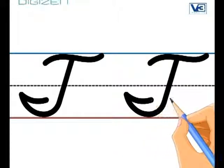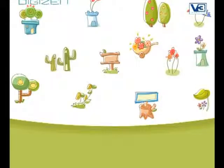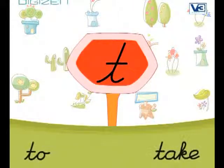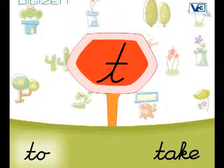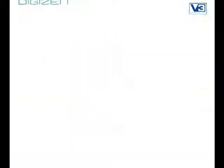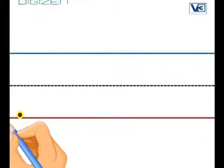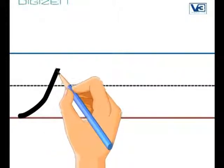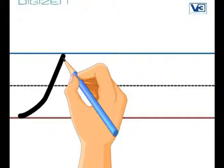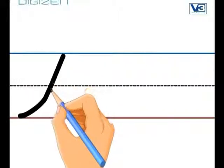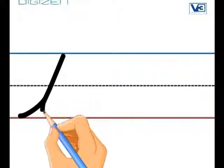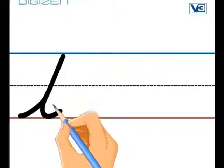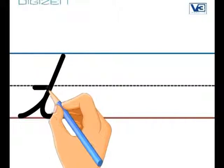We are going to work on our lowercase T like you see here in the word to and also in the word take. We are going to start at that bottom and this time we are going to zip up to that top line. Then zoom back down and do a cursive curl and trace that middle line to cross our T.